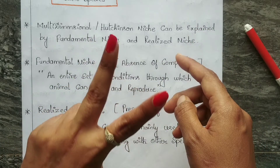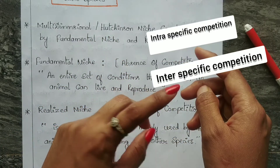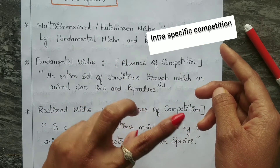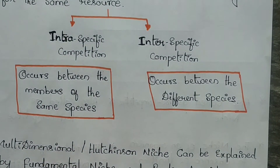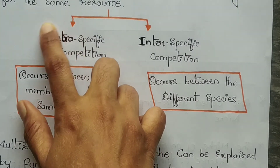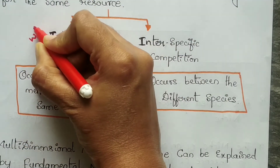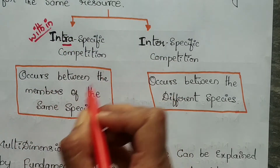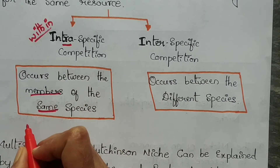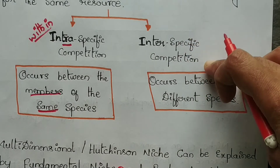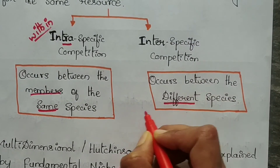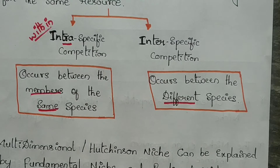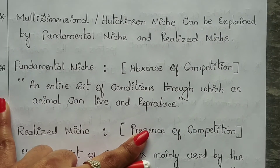In competition there are two types: intraspecific competition and interspecific competition. Intraspecific competition — 'intra' means within — occurs between members of the same species. Interspecific competition occurs between different species.